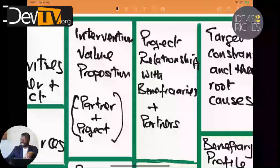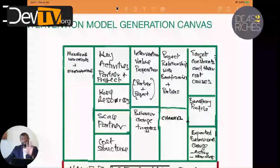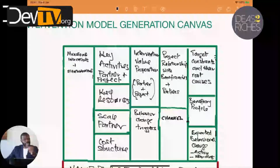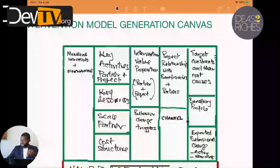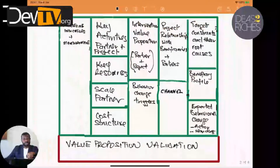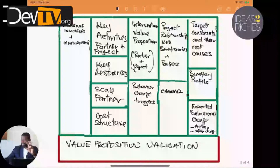The next column down is the project relationship with beneficiaries and partners. It's important to know this upfront when designing the intervention: how often do we need to engage with a partner, how often with the beneficiaries, and what sort of relationship do we need? Is it that we continuously do things together with a partner, while beneficiaries come into our circumference only when the partners need to sell to them — or do we need to engage with beneficiaries from the start and throughout the intervention? And then there's channel: how are we going to reach the beneficiaries and the partners?